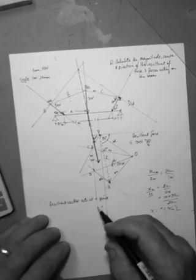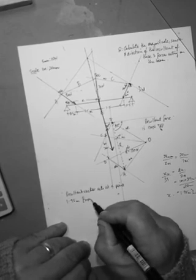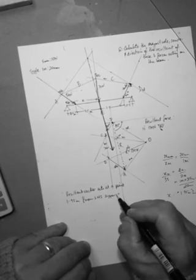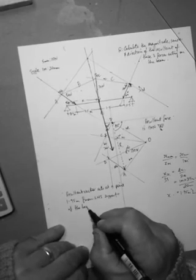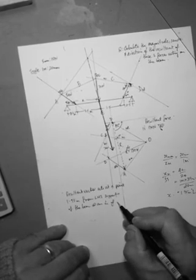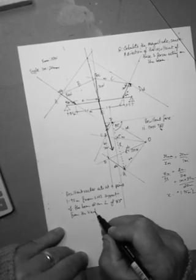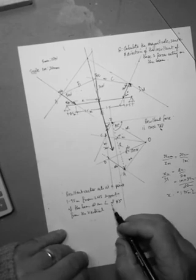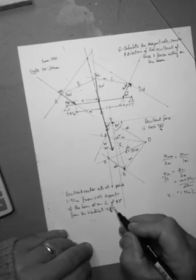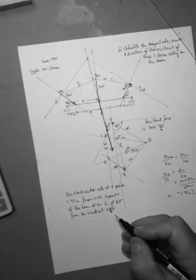So that we could write down over here, that the resultant vector acts at a point, 1.95 metres from the left-hand side support of the beam, at an angle of 83 degrees from the vertical. I'll just indicate it using, showing which direction the 83 degrees is, just using the arrow convention, like that. 83 degrees to the vertical, and that gives us everything.